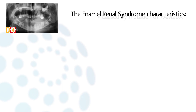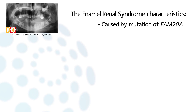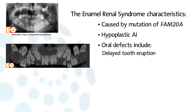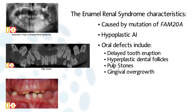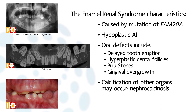AI could be associated with other abnormalities in several syndromes. The enamel-renal syndrome is caused by mutations of FAM20A. Patients have hyperplastic AI which, in extreme cases, may present as a complete absence of enamel. Associated oral defects may include delayed tooth eruption, hyperplastic dental follicles, pulp stones, and gingival overgrowth with ectopic calcification. Calcification of other organs, most frequently nephrocalcinosis, is variably reported. Hence, patients should be referred for specialist renal evaluation and follow-up.